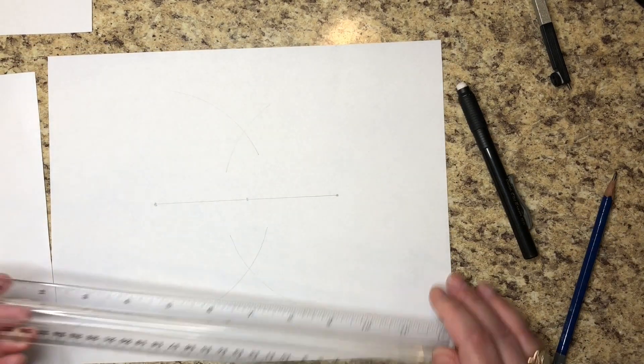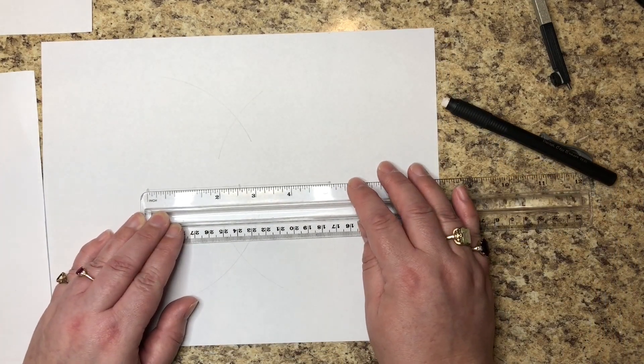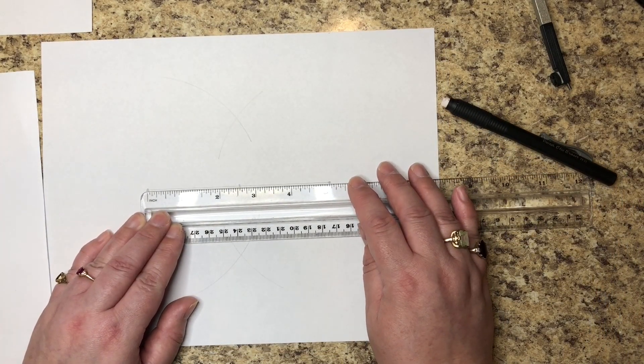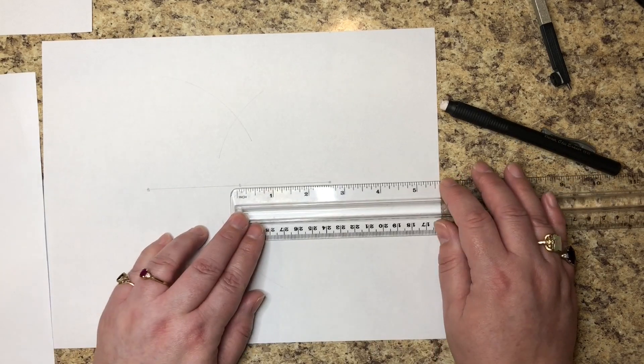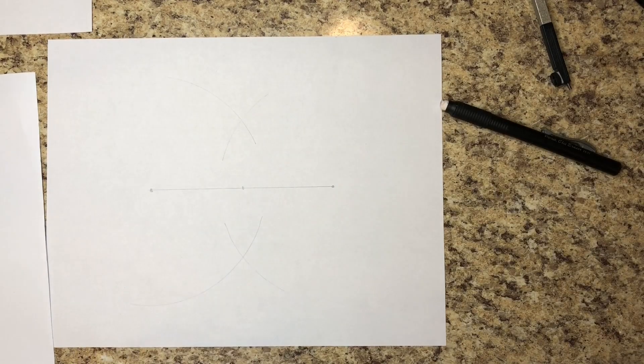Now let's take our ruler and double check. What do we have? A little more than two and a half and a little more than two and a half. Perfect.